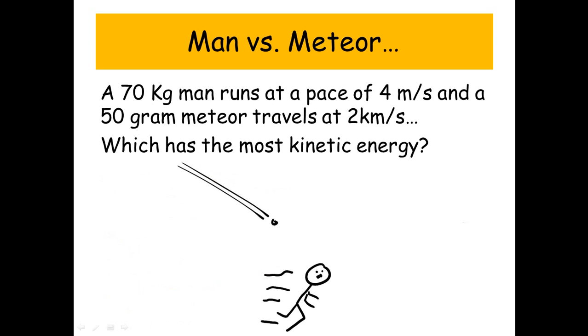Man versus meteor. A 70 kilogram man runs at a pace of 4 meters per second, and a 50 gram meteor travels at 2 kilometers per second. Which has the most kinetic energy?